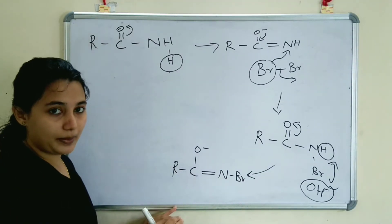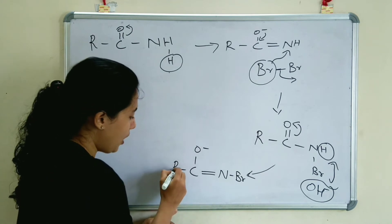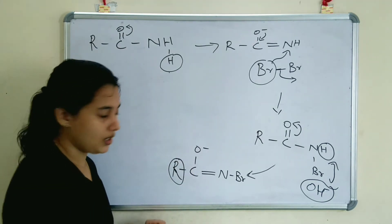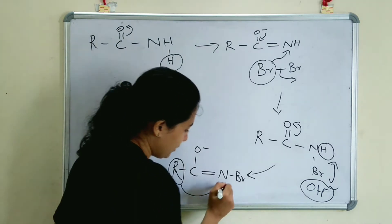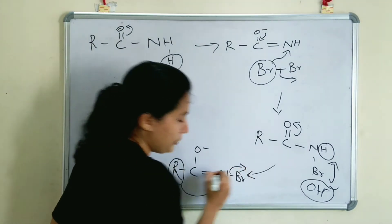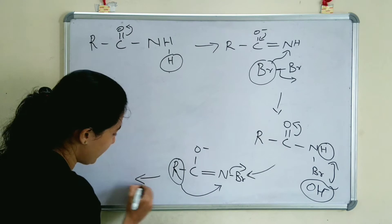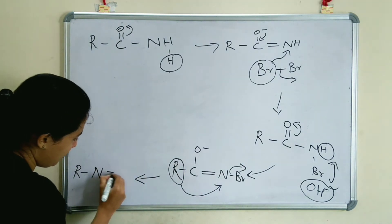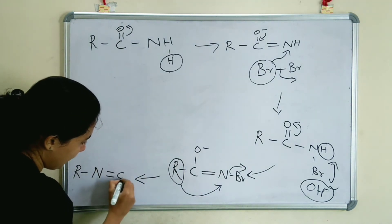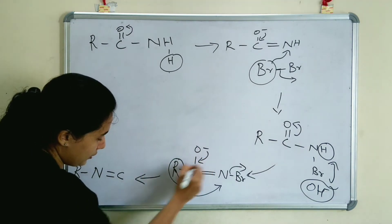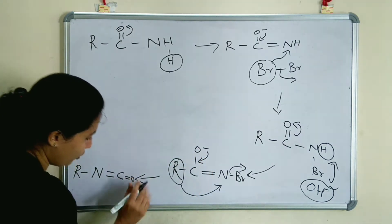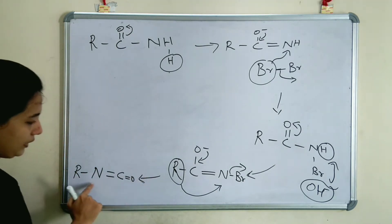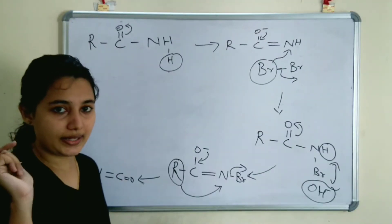Now the rearrangement happens — rearrangement of the R group to form isocyanate. R shifts to nitrogen and bromide is lost. The remaining structure is isocyanate: R-N=C=O.